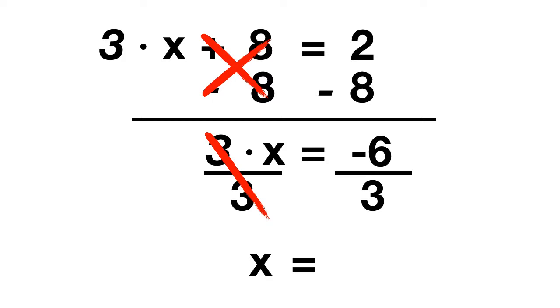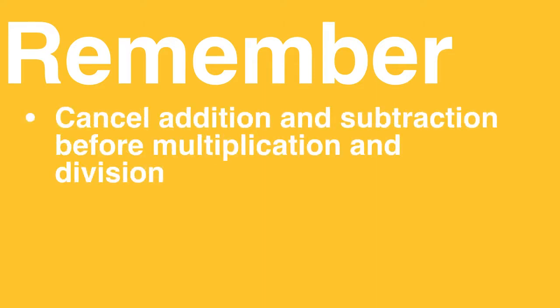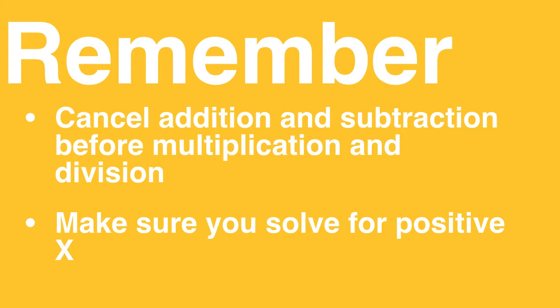Remember that a negative divided by a positive is a negative, so our answer, negative 6 divided by 3 will just be negative 2. So from today, make sure you remember to always cancel addition and subtraction before multiplication and division. And also make sure that when you solve for x, you're solving for positive x.